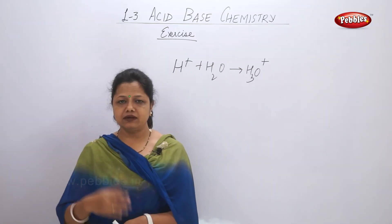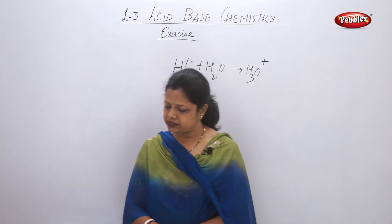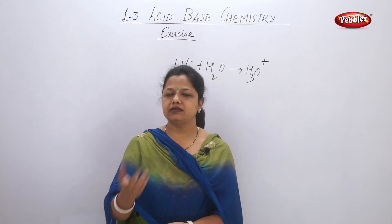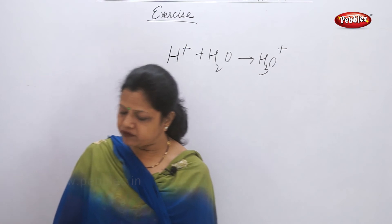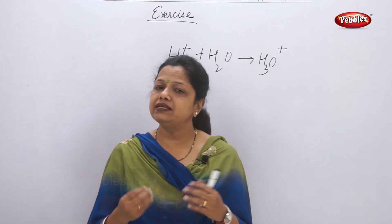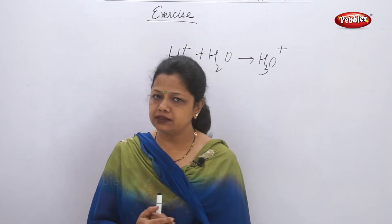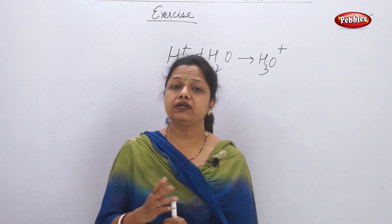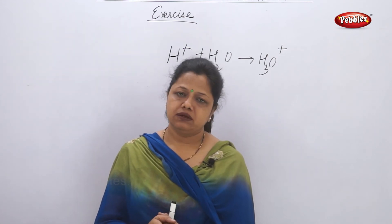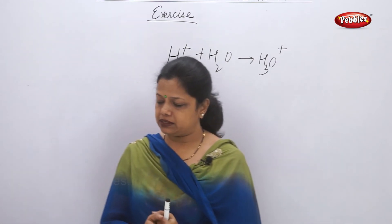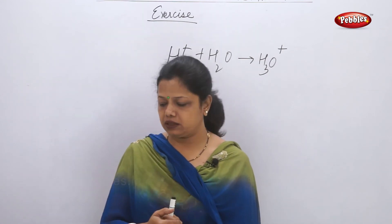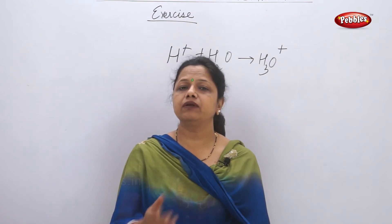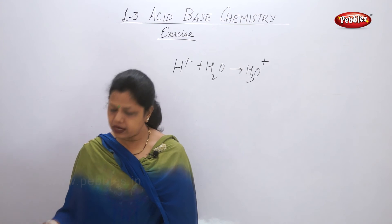Now let's cover some extra questions which may help in cracking board exams. First: state two acid-base indicators and mention their color change. Taking synthetic indicators — phenolphthalein is colorless in acidic medium; if a sample doesn't change the color it is acidic, but if put in a basic solution it turns pink. Methyl orange gives orange color in an acidic solution and turns yellowish in a basic solution.